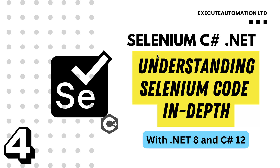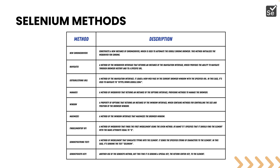Welcome to the next lecture of our Selenium with C# .NET course. In this lecture we'll be talking about understanding Selenium code in depth. In our last lecture while writing the code, we used quite a lot of methods — like calling an instance of a new ChromeDriver, which was mainly to construct a new instance of the Chrome driver used to invoke the Google Chrome browser, and then we used a method called navigate, which was mainly to navigate to a particular URL like google.com.